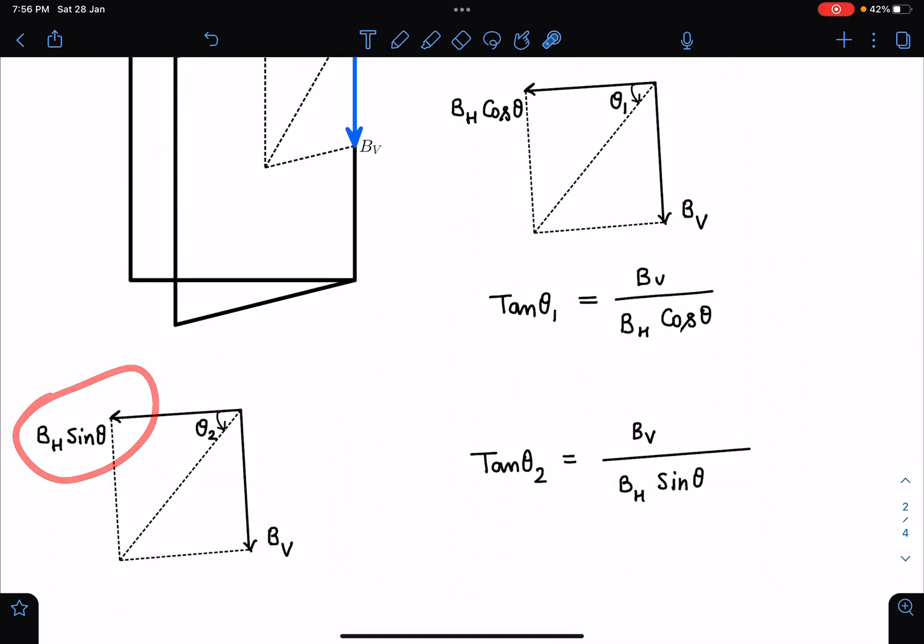In both the cases the magnetic field component will be Bₕ sin θ, whether it is cos of 90 plus θ or cos of 90 minus θ. In both cases the magnitude remains the same, which is Bₕ sin θ.